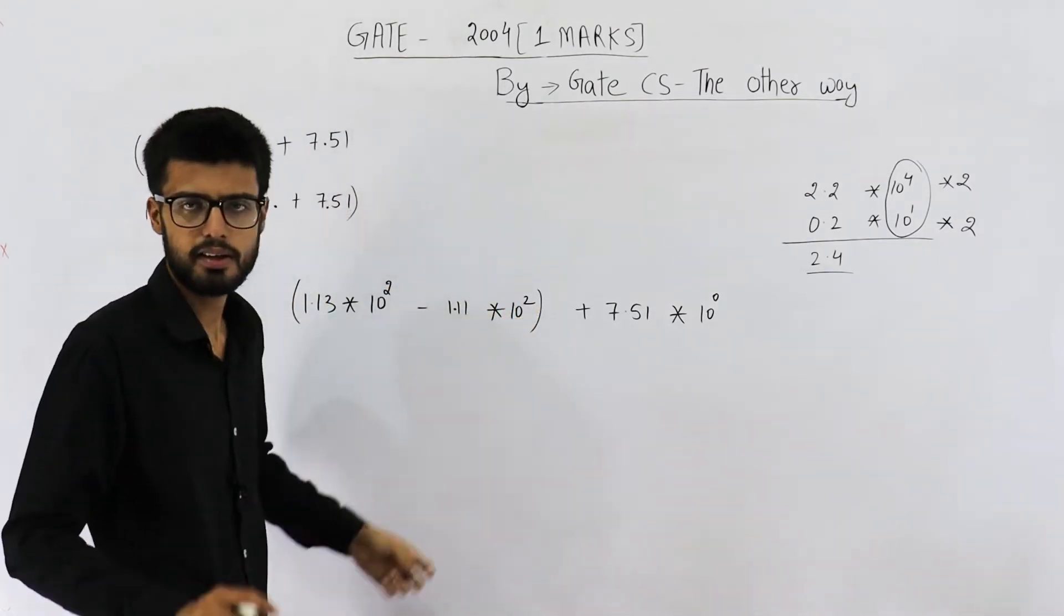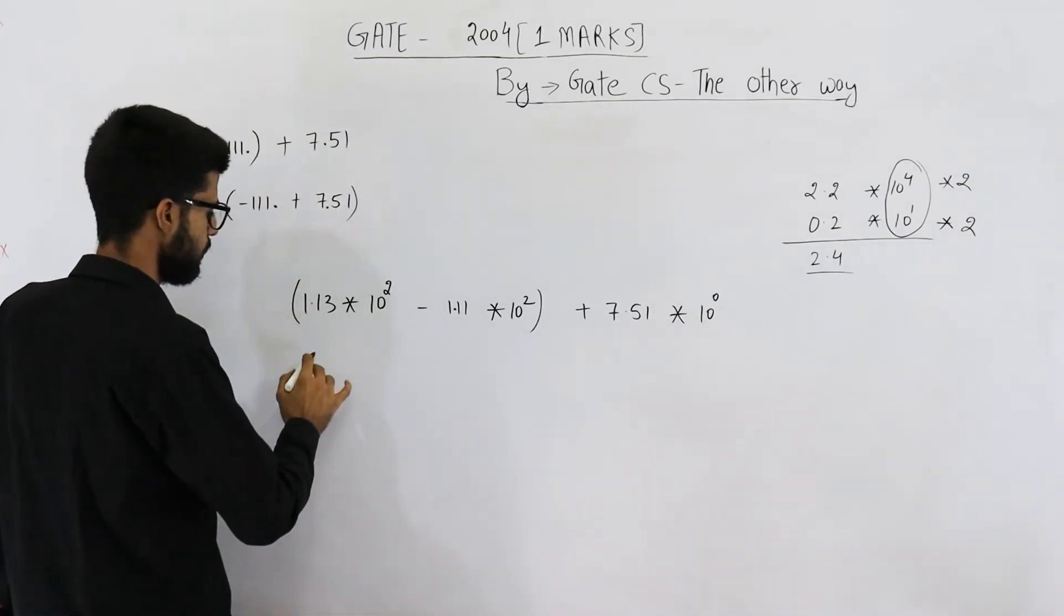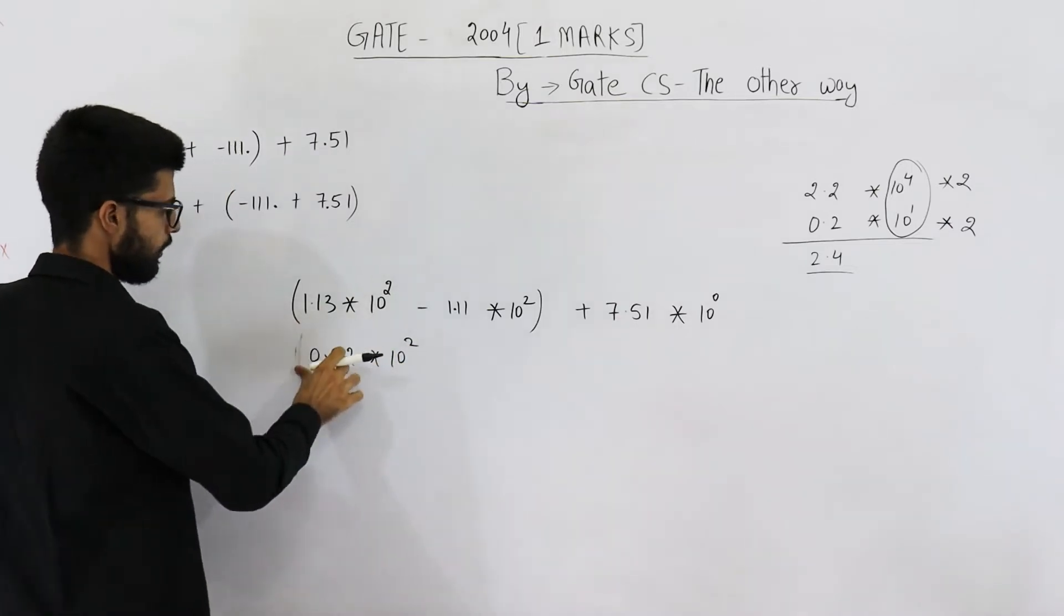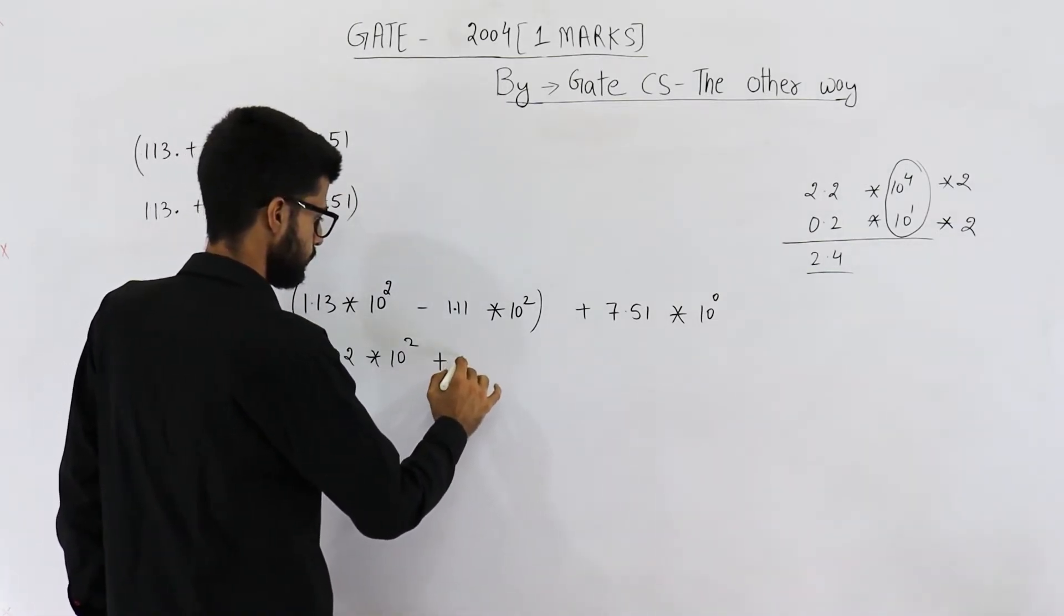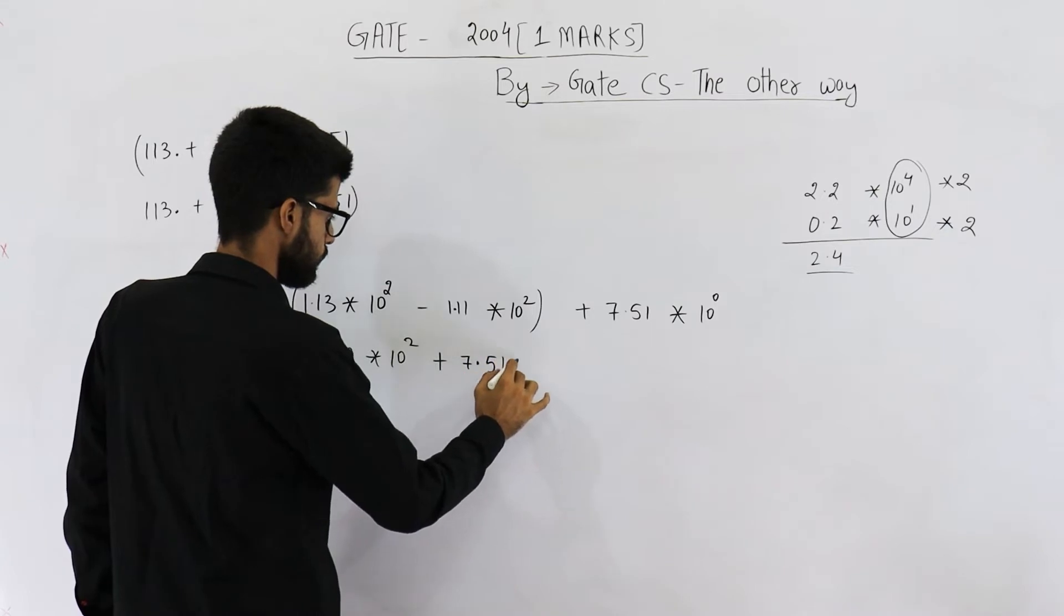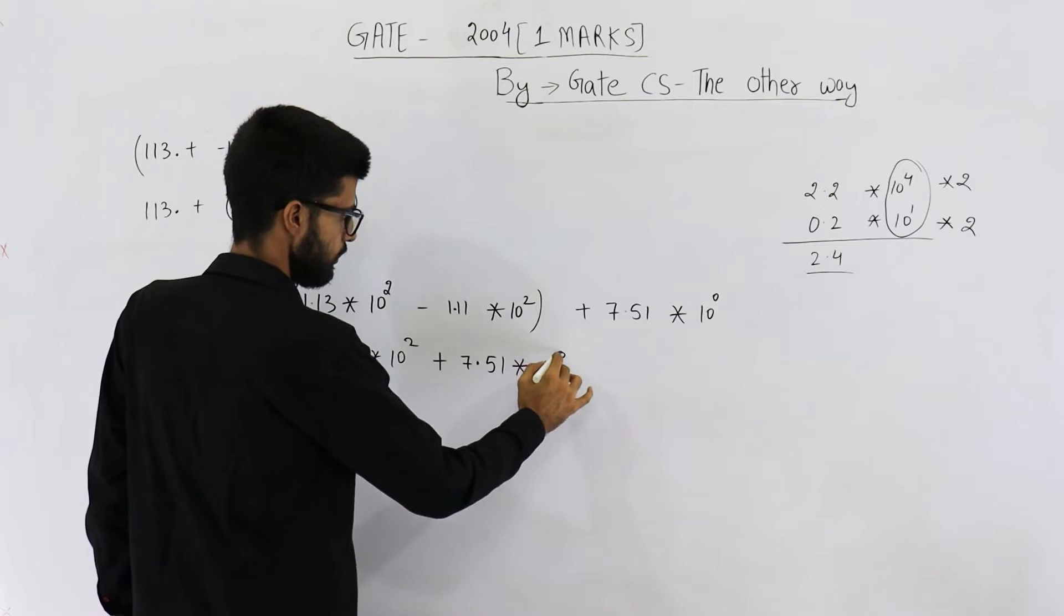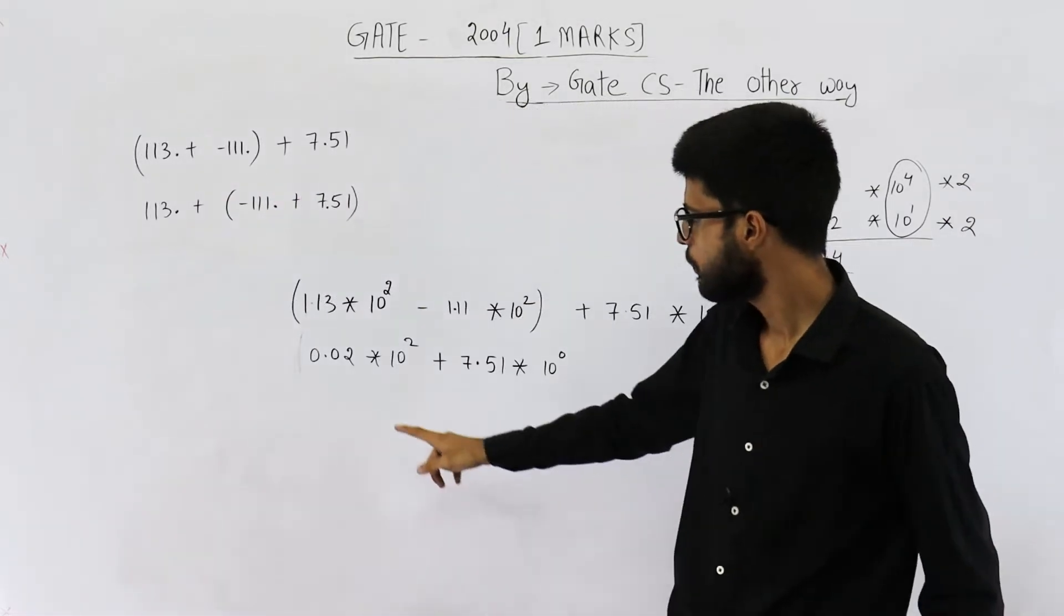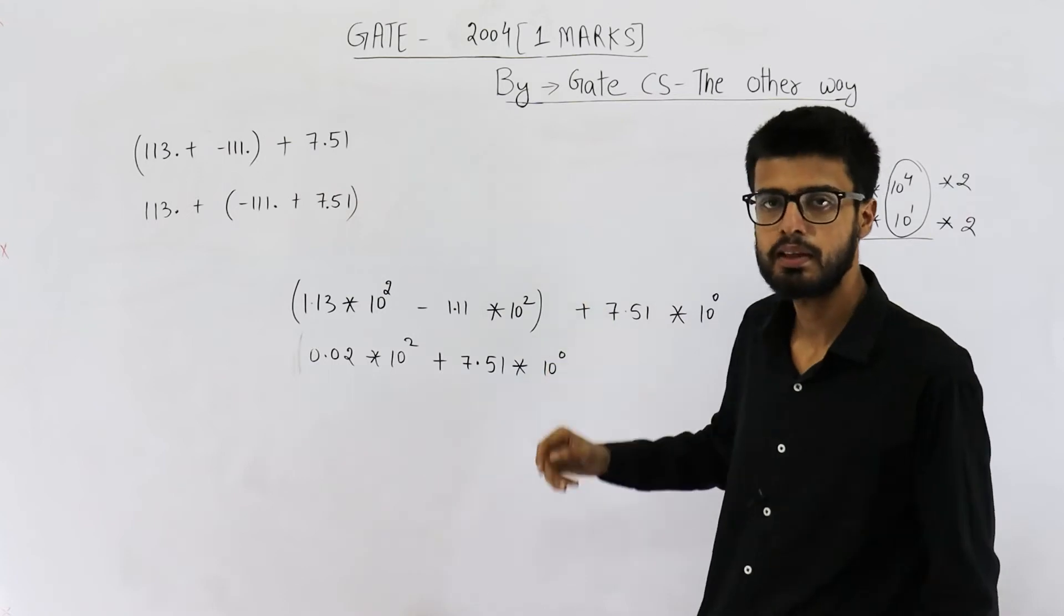So here the exponents are equal. We can simply just solve it. 1.13 - 1.11 will become 0.02 × 10² is left as it is. And this is plus 7.51 × 10⁰. Now see what I am saying. They cannot be directly added. You cannot add these mantissas. We need to consider exponents also because they are not equal.